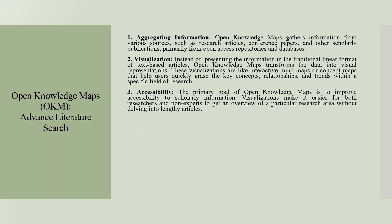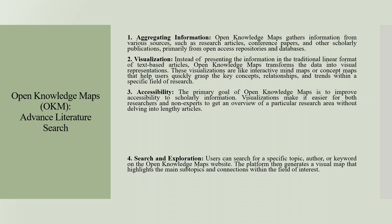The primary goal of open knowledge maps is to improve accessibility to scholarly information. Visualizations make it easier for both researchers and non-experts to get an overview of a particular research area without delving into lengthy articles.